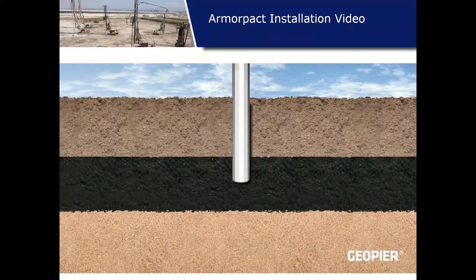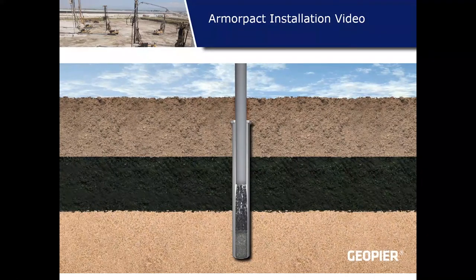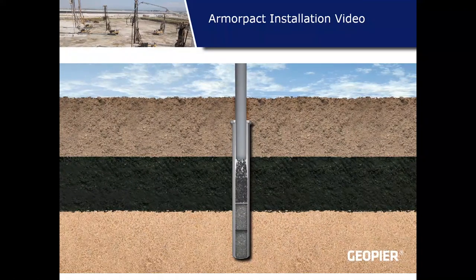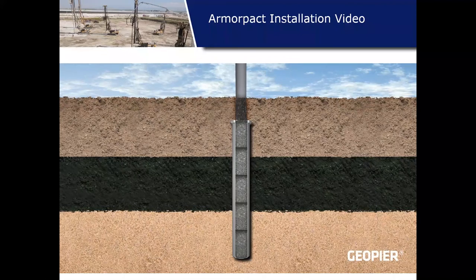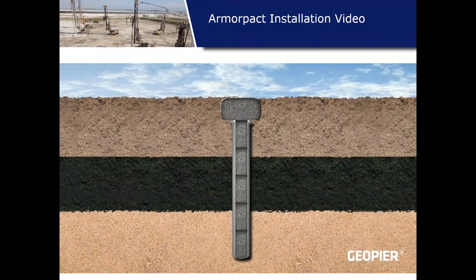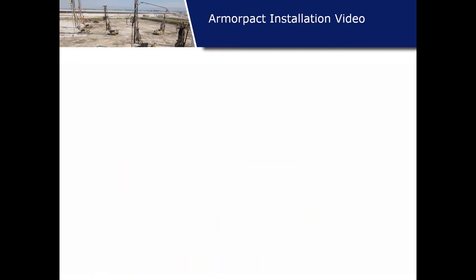In the animation: we drive the HDPE shell down to a stiffer bearing stratum — worried about organics causing bulging — then build a rammed aggregate pier back to the ground surface. The aggregate is confined and won't lose confinement because of the HDPE shell. The result is a rammed aggregate pier above the shell that can be easily excavated, allowing us to build shallow foundations as normal. Great when you have shallow organics.